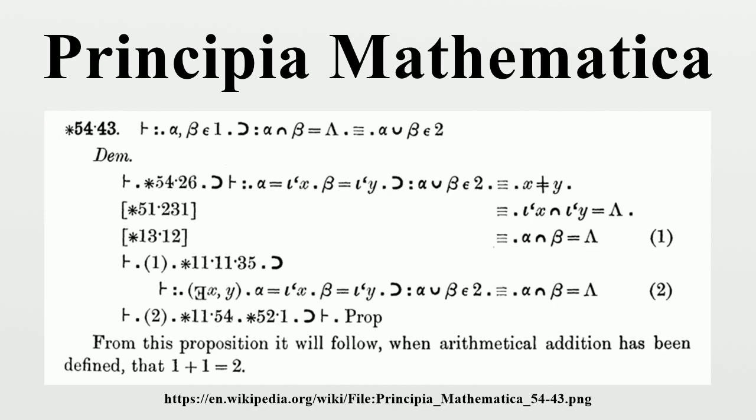Disjunction: If p and q are any propositions, the proposition 'p or q', i.e., either p is true or q is true, where the alternatives are to be not mutually exclusive, will be represented by p V q.